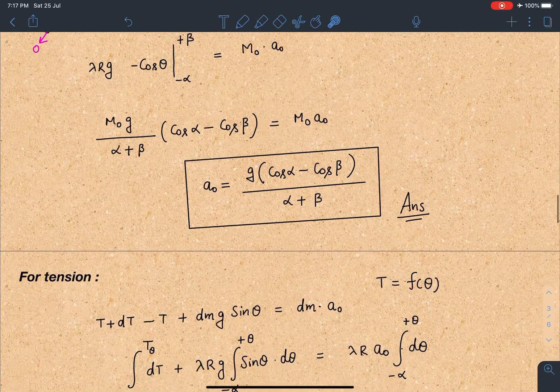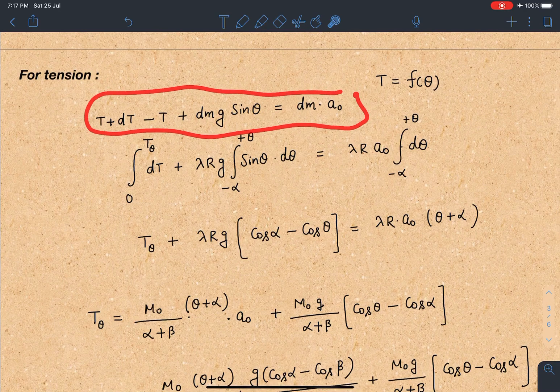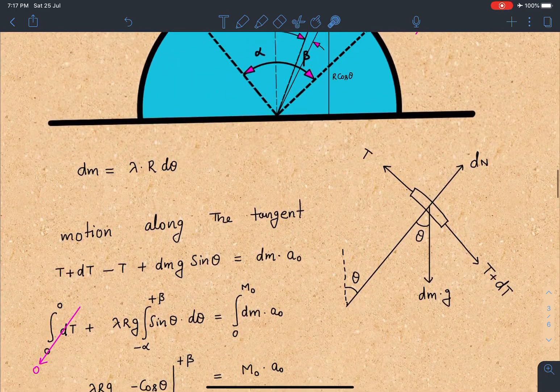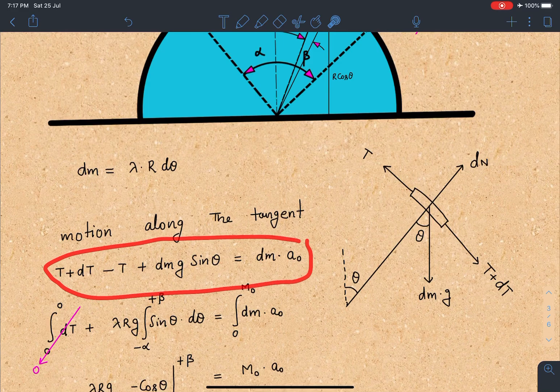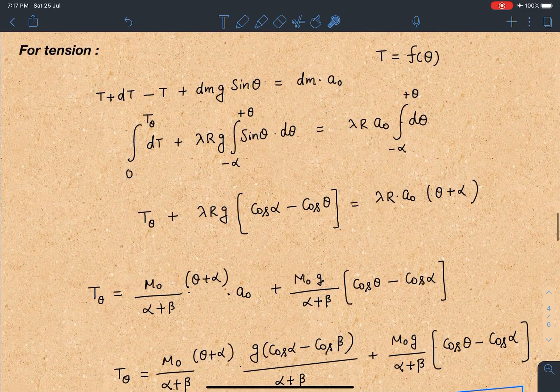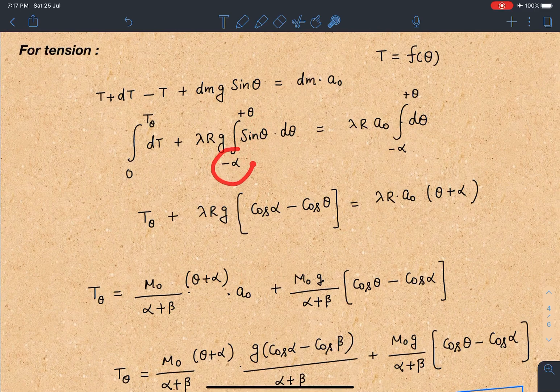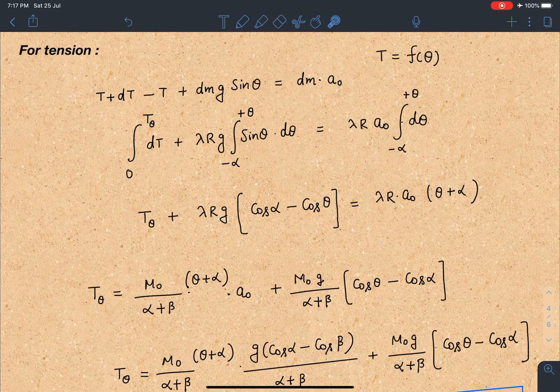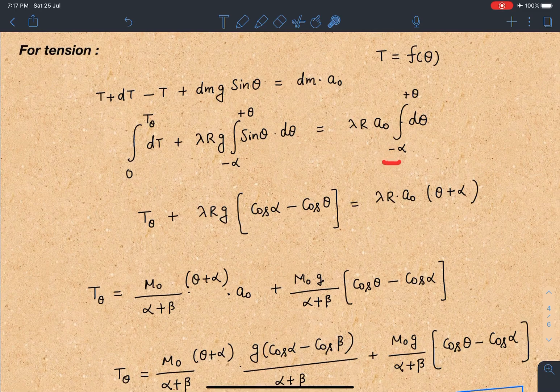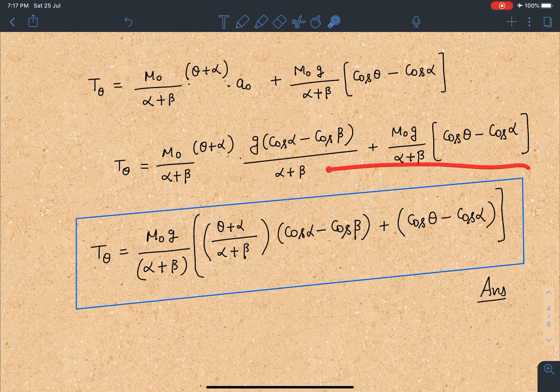For second part we will go back to the same equation which we have written along the tangent earlier, which I have written here, you can see motion along the tangent. Now in this equation I know the value of a_naught which I have calculated in the previous part. So this time I am taking this limit from minus alpha to general angle theta. So when angle is minus alpha then tension was zero. And here tension at theta is T_theta I am writing. Other side also lambda r a_naught and minus alpha to plus theta. When I simplify this I am going to get T_theta as a function of theta here.